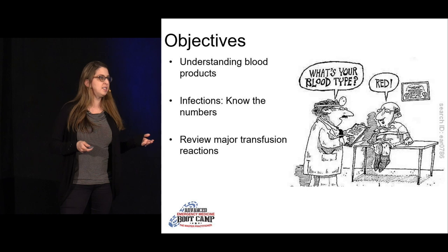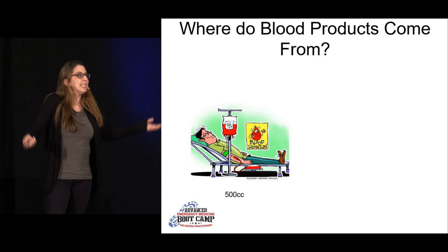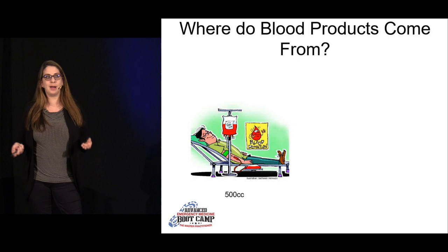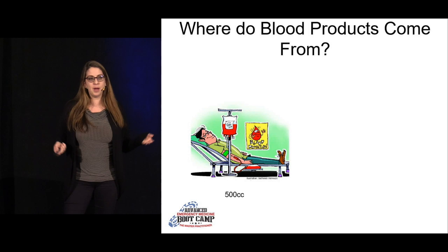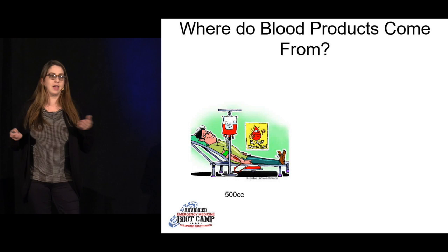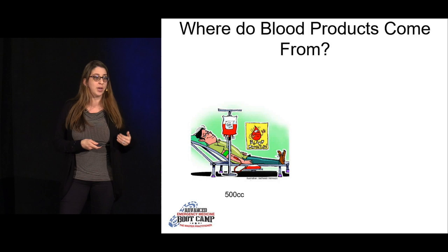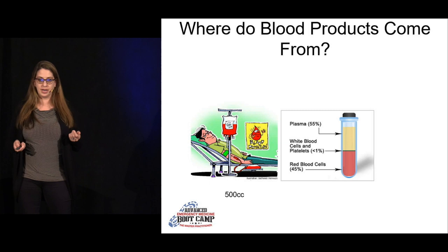Ideally we would transfuse patients whole blood, but there are a couple of problems. First, you'd be limited by whichever blood component has the shortest shelf life. Second, some patients — like those with CHF — can't tolerate the volume, and may only need one specific component. So instead we fractionate blood into its components, spin it down, remove about 80% of the plasma, and store it that way.